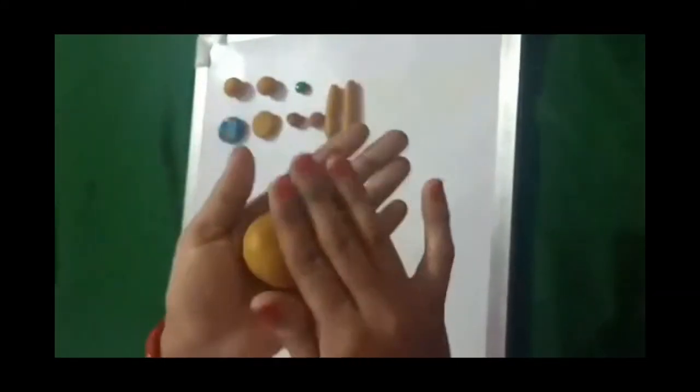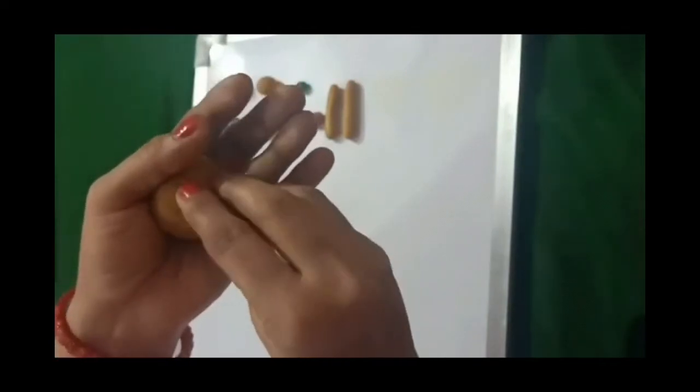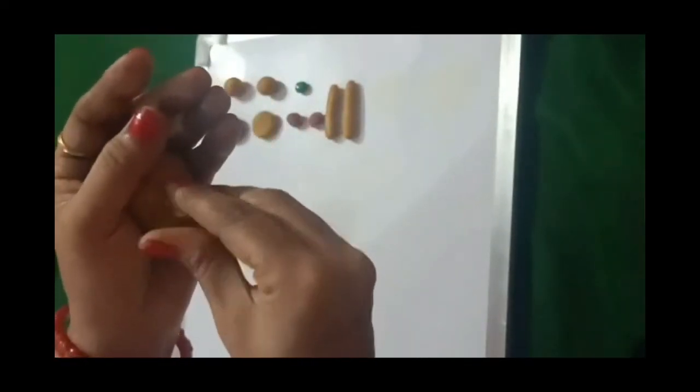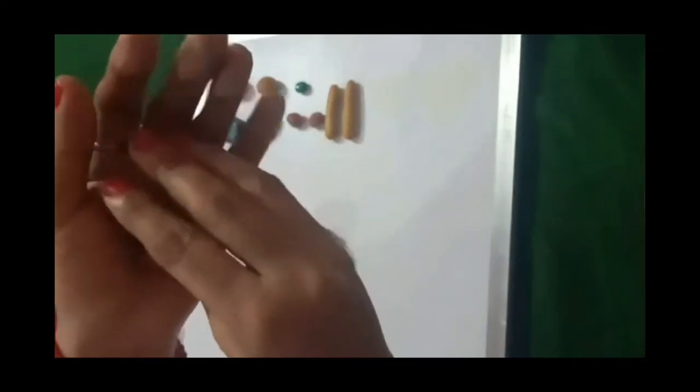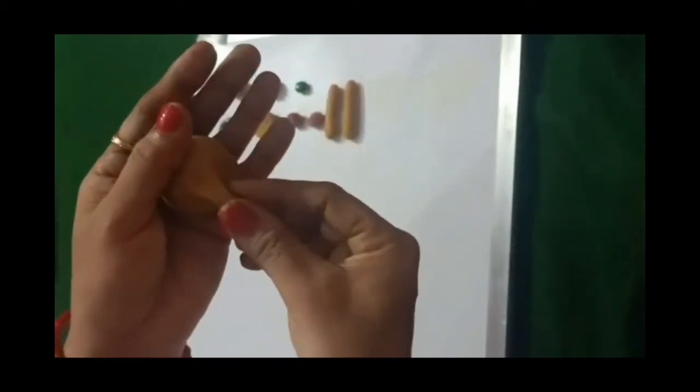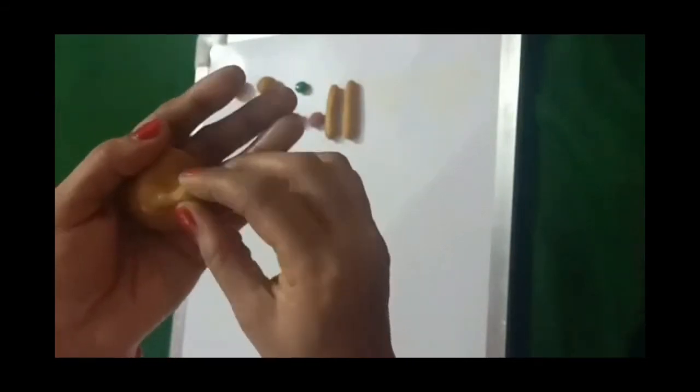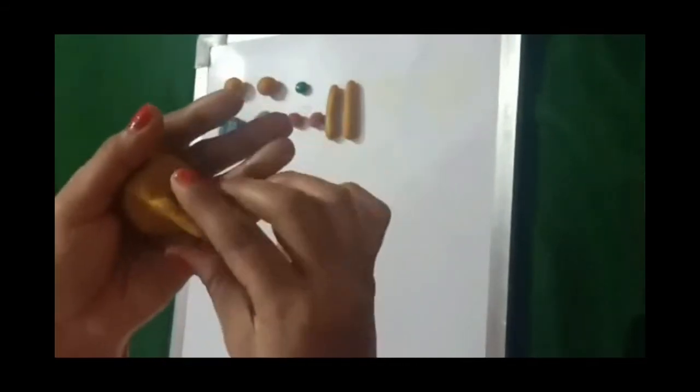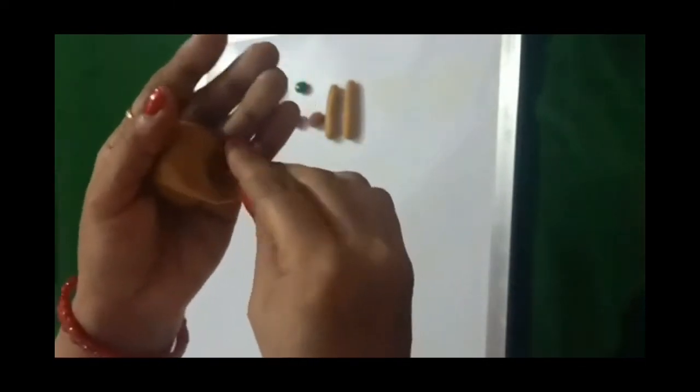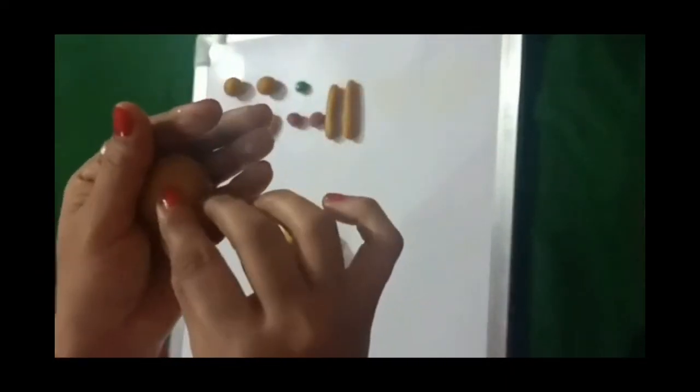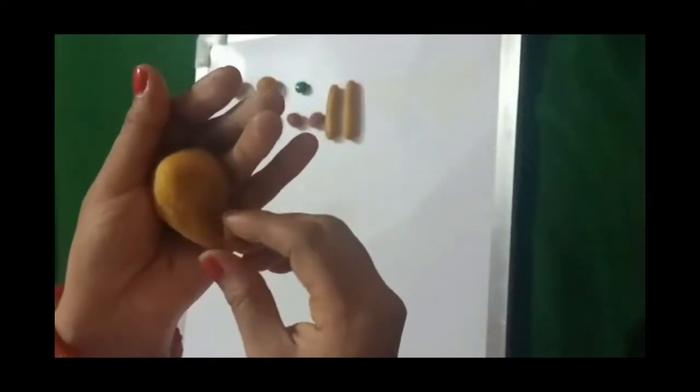Now I am going to take another ball. This is a smaller one. And I am giving the shape like this. And I am giving the shape like this, like this. Now I am going to turn it like this.